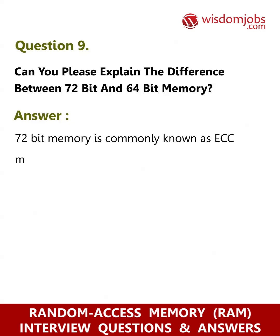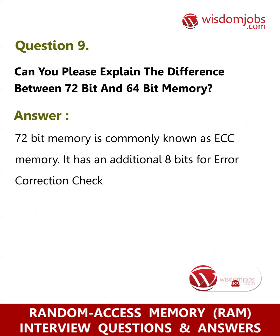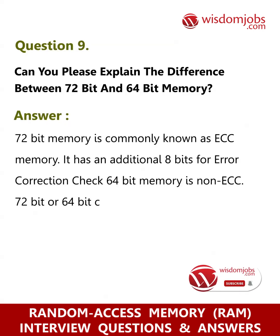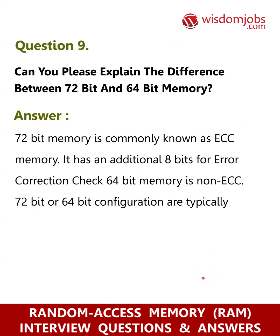Question 9: Can you explain the difference between 72-bit and 64-bit memory? Answer: 72-bit memory is commonly known as ECC memory. It has an additional 8 bits for error correction check. 64-bit memory is non-ECC. Both 72-bit and 64-bit configurations are typically found in 168-pin DIMMs.